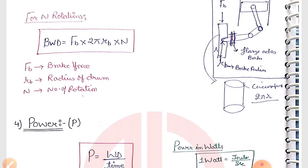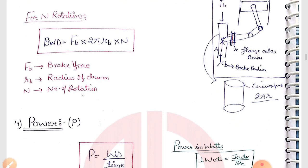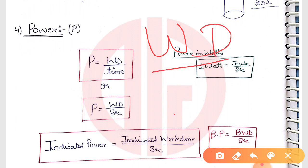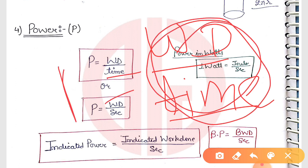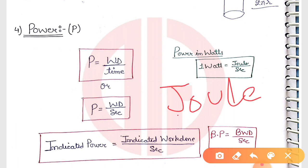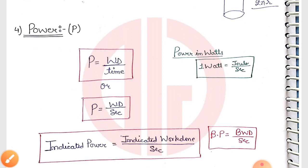Next, power is very important and generally used in equations. Power is easy to understand - it's work done divided by time. We take work done in joules and time in seconds. If we take work done in kilojoules, then we convert accordingly.